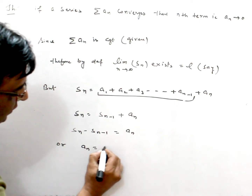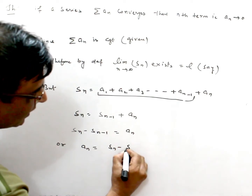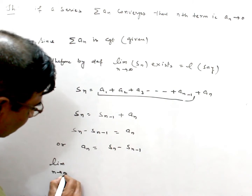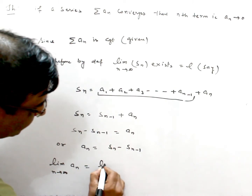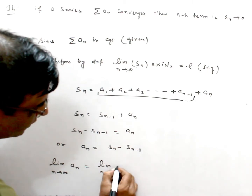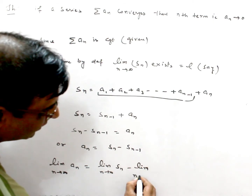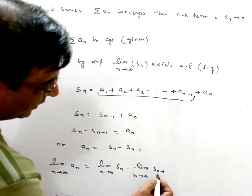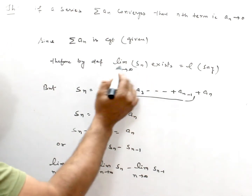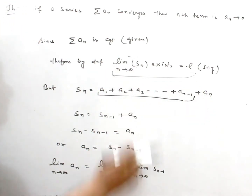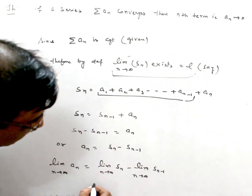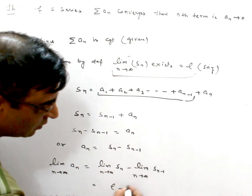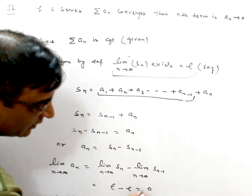So AN equals SN minus SN-1. Now apply the limit as N approaches infinity. Since we already supposed that SN converges to L, SN-1 also converges to L. Therefore the limit equals L minus L, which is equal to zero.